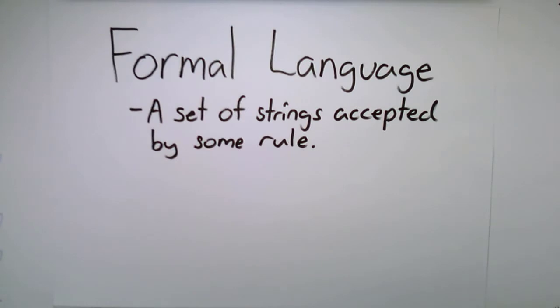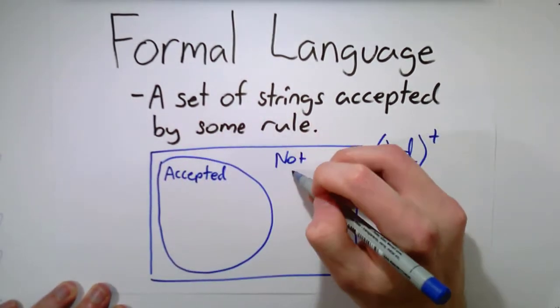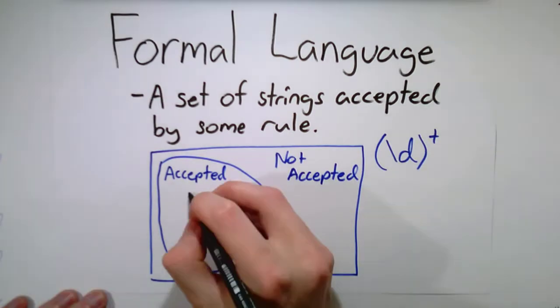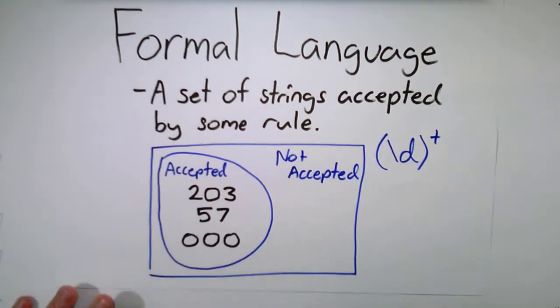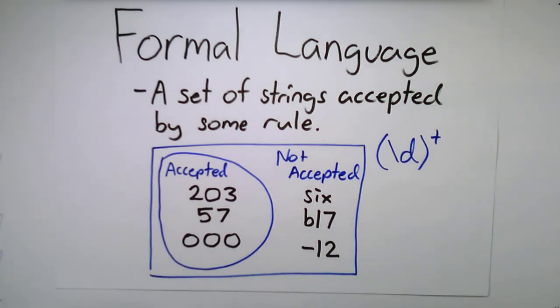For example, backslash D+ produces a language that includes strings like 203, 57, and even 000, but not B17 or negative 12.